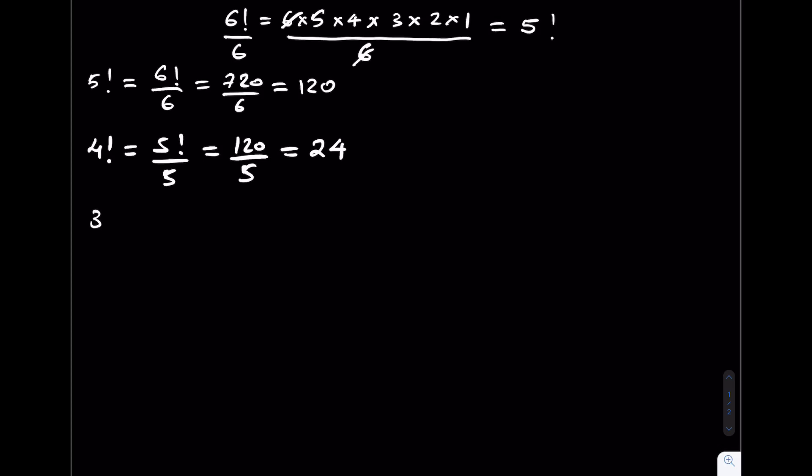3 factorial is given by 4 factorial over 4. This is equivalent to 24 over 4 which is equal to 6.